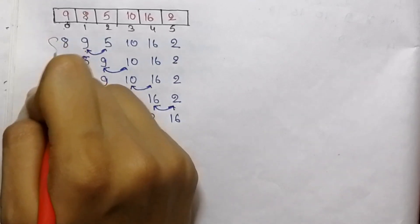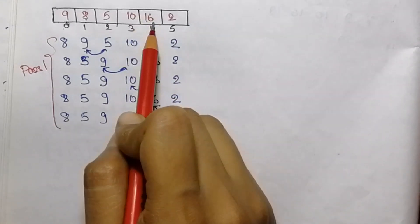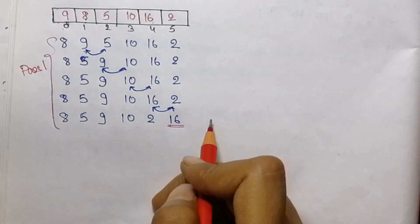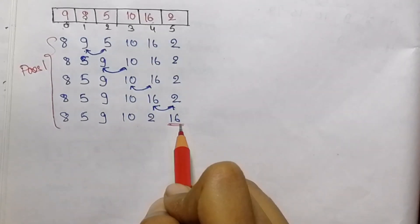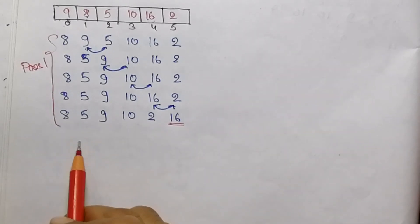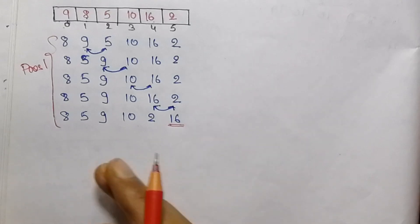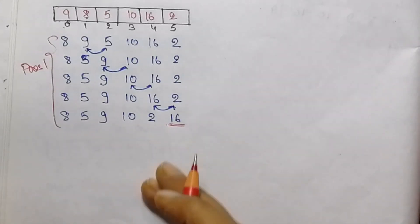This is the first pass. And see here, the largest element, that is 16, got its sorted position. We need to sort the array in ascending order, and the largest element is stored at the last position. Now we will move towards pass 2, which will start again from index 0. And it will run for the first n-1 elements as the last element is already sorted, so we do not need to compare the second last element with the last element.